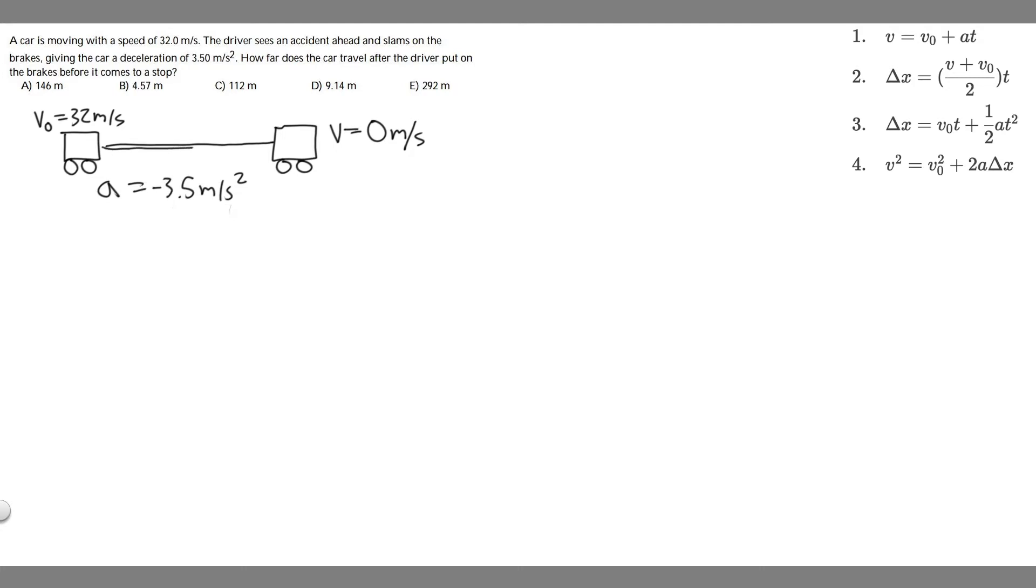So we're going to slow down until the car becomes zero meters per second, because we're trying to find how far it travels before it comes to a stop. When it's stopped, its velocity is zero. Basically it goes from 32 to zero at a rate of this, and we're trying to find how far it travels.